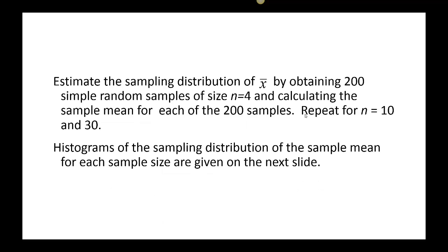We are going to estimate the sampling distribution of X-bar by obtaining 200 simple random samples, and we are going to do this three different times. The first time, we take 200 samples each of size 4. Then we take 200 random samples of size 10. And finally, 200 random samples of size 30. We will draw the histograms of the sampling distributions of the sample mean for each sample size.